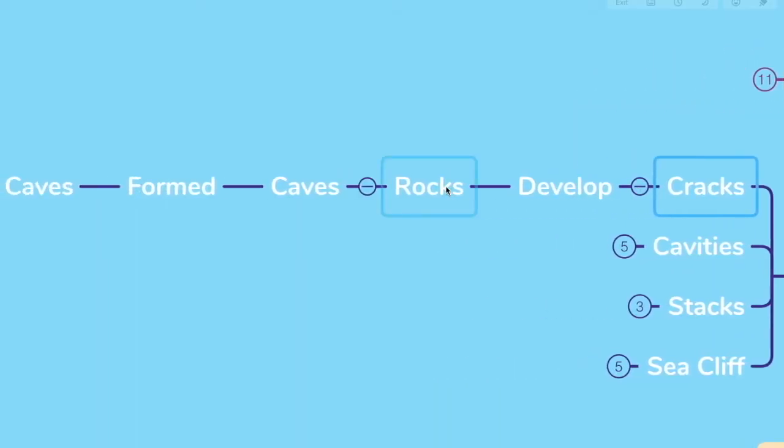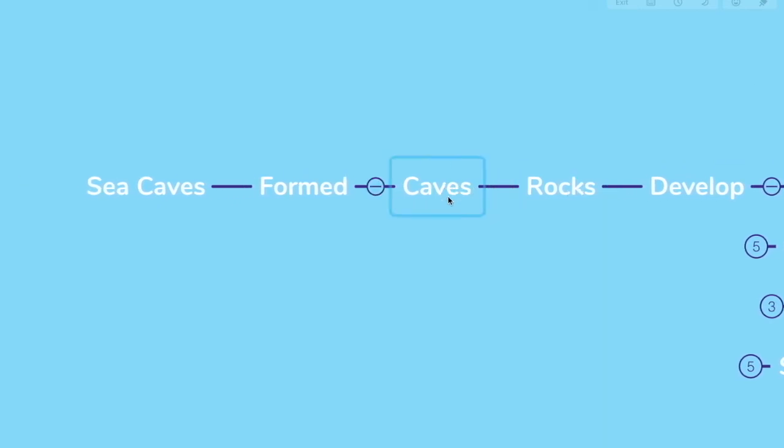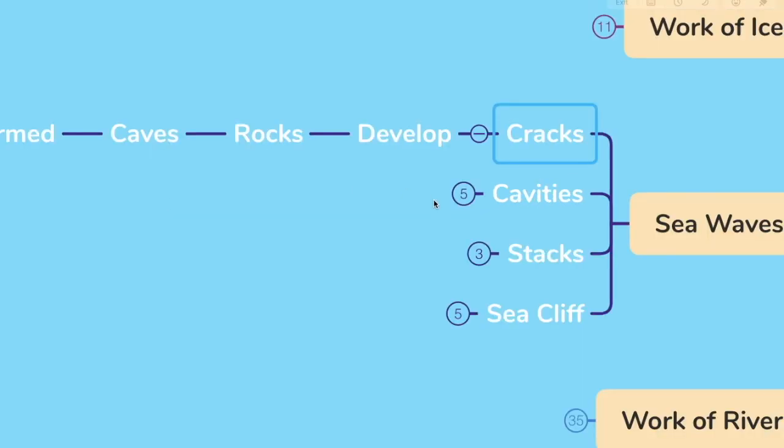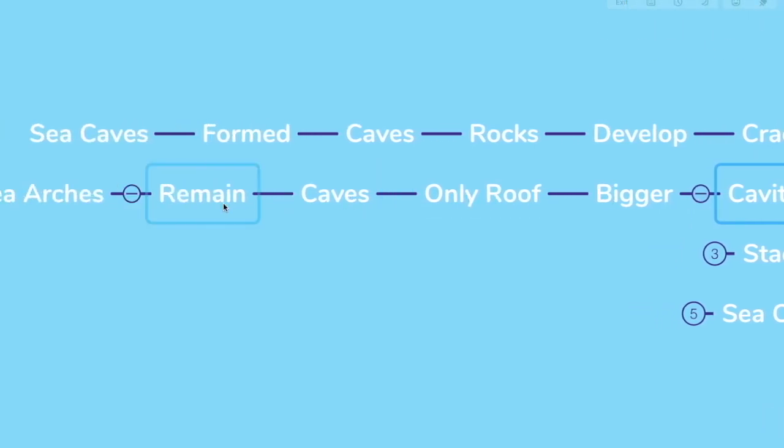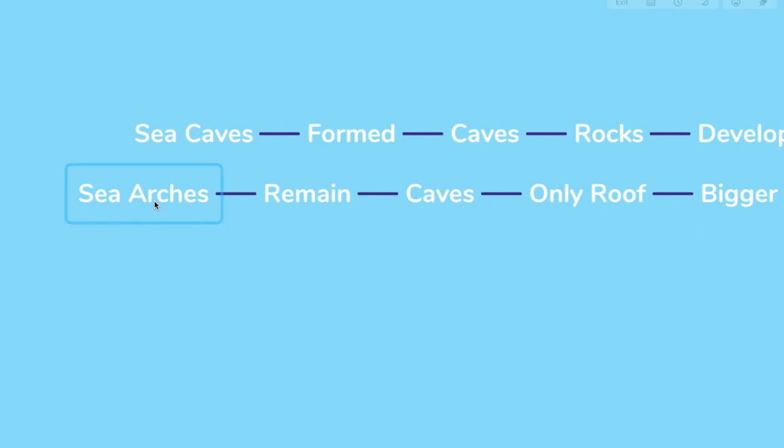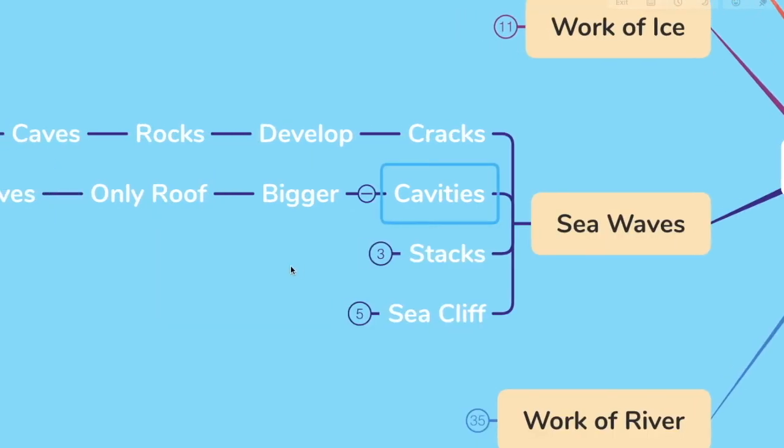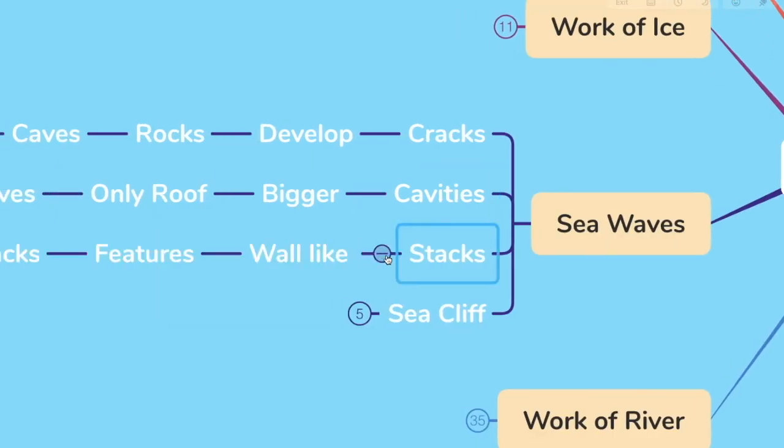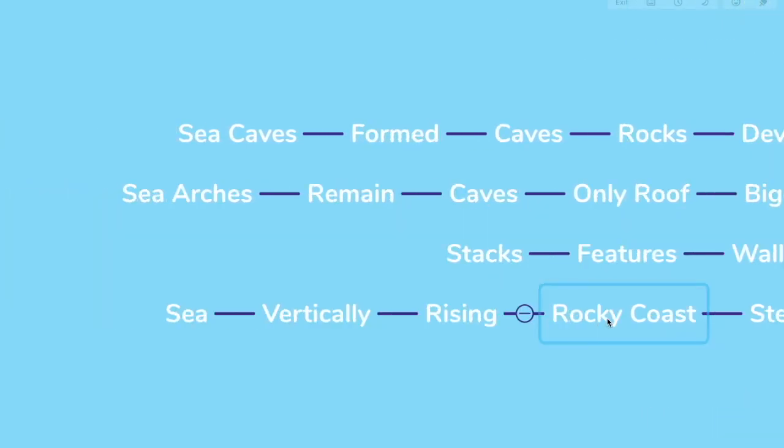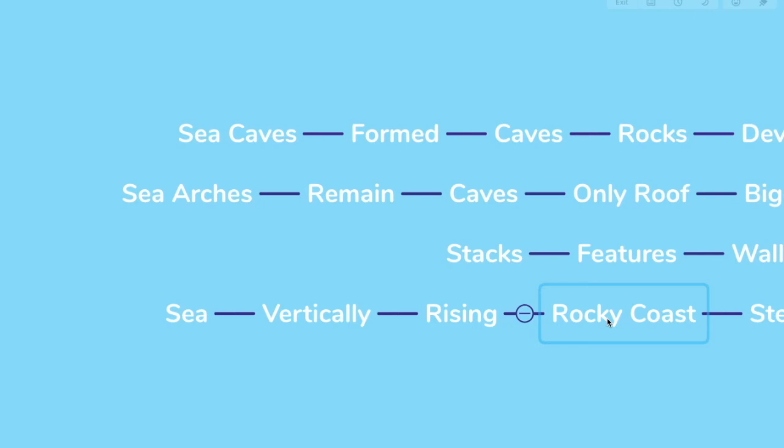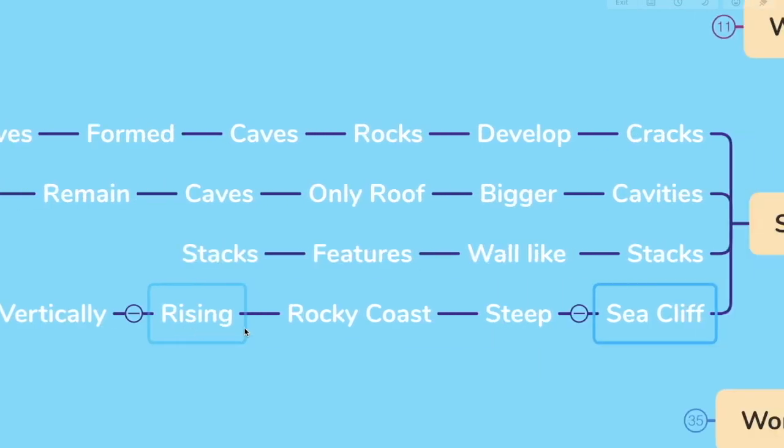Cracks develop on rocks and over a period of time, they become hollow, forming caves. These are called sea caves. After some time, these cavities become even bigger and only the roof of the caves remain, forming sea arches. Let's look at the next one. The wall-like features are called stacks. The steep rocky coast rising almost vertically above the sea are called sea cliff.